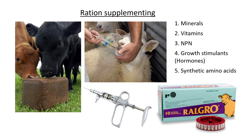Ralgro, shown here, is a hormone that can also be injected — usually behind the ear — for slow release to help animals grow. Growing bigger animals increases their weight and ultimately their value. The main things to supplement are: minerals, vitamins, NPN (non-protein nitrogen — not proteins but nitrogen-containing compounds the animal uses to produce proteins), growth hormones, and synthetic amino acids.